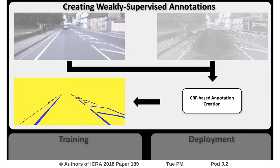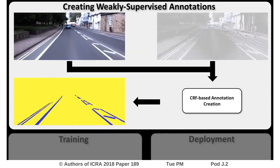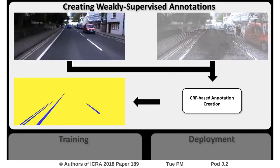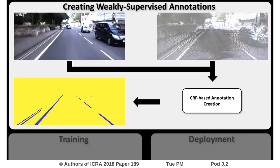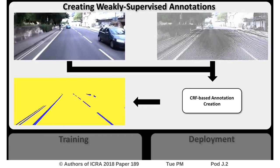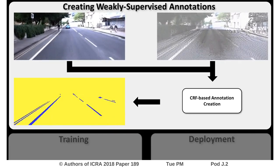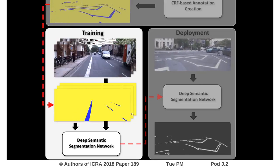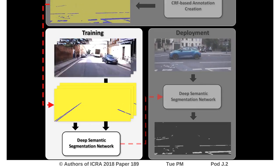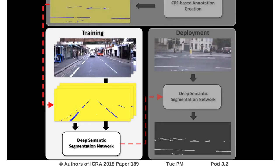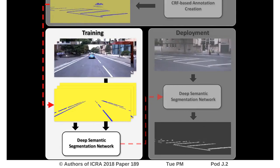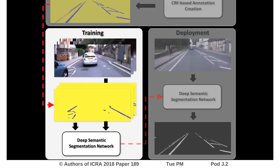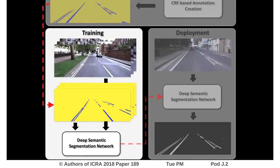More specifically, we use a monocular image in combination with a LiDAR point cloud of reflectance values as inputs to a conditional random field. With this approach, we generate large quantities of annotations without manual labeling, and use these together with the corresponding images to train a deep semantic segmentation network.